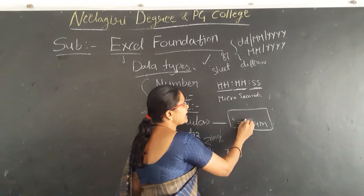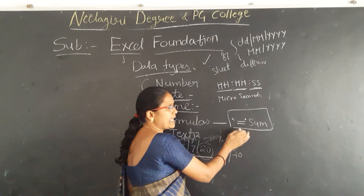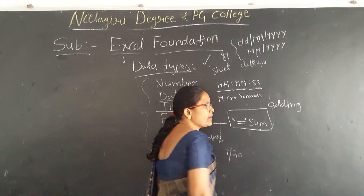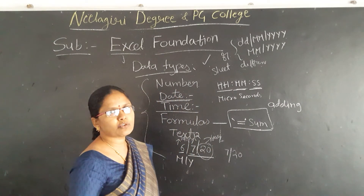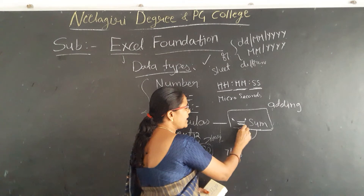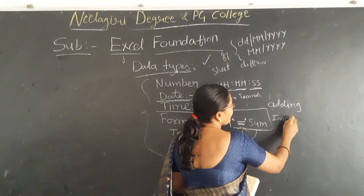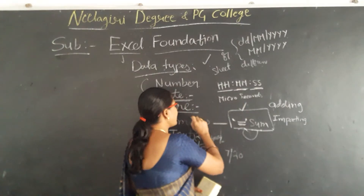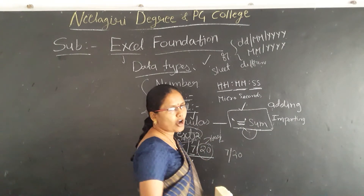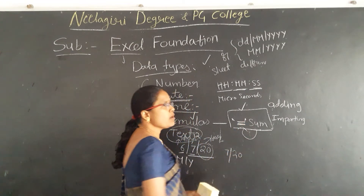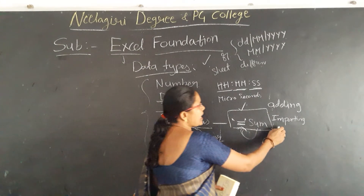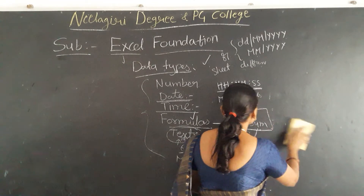The equal sign represents the start before the particular function name. For example, if you are using the SUM function to add all numbers — whether 10 numbers or 100 numbers — the equal sign must appear before the function name. This is important. When you declare it this way, it will be calculated as a formula. Otherwise, it will be considered as text. That's why the equal sign is important before the function name — at that time it will be calculated.